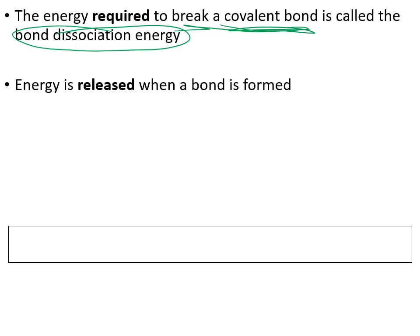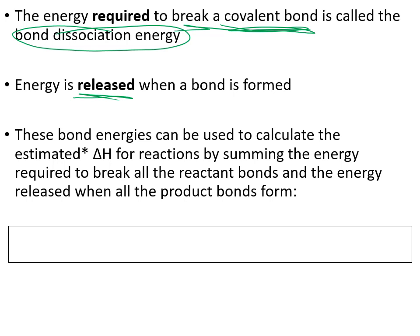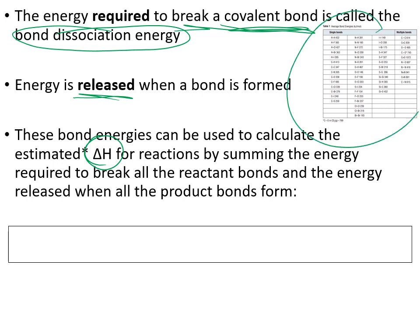Depending on which atoms are bonded, there will be different bond energies associated with breaking or forming those bonds. To break a bond requires energy input; to form a bond releases energy. For a given chemical reaction, you can find the approximate difference in energies between reactants and products by calculating the energy for each type of bond being broken and formed, and summing those values together to get an approximate enthalpy change, delta H, for that reaction.